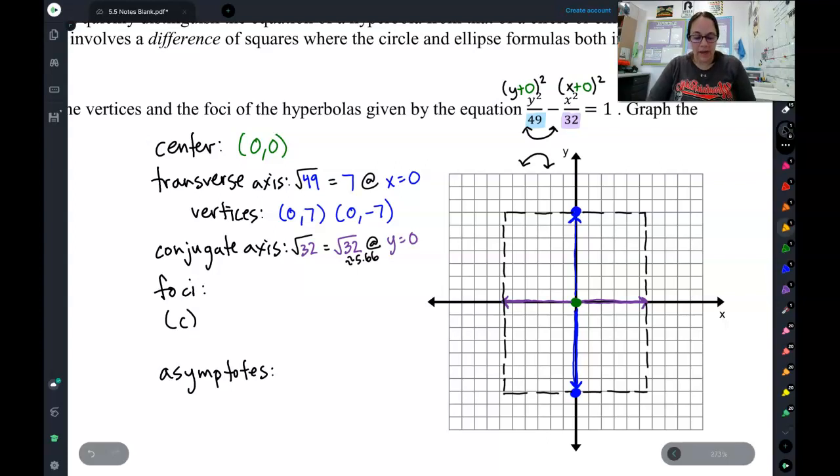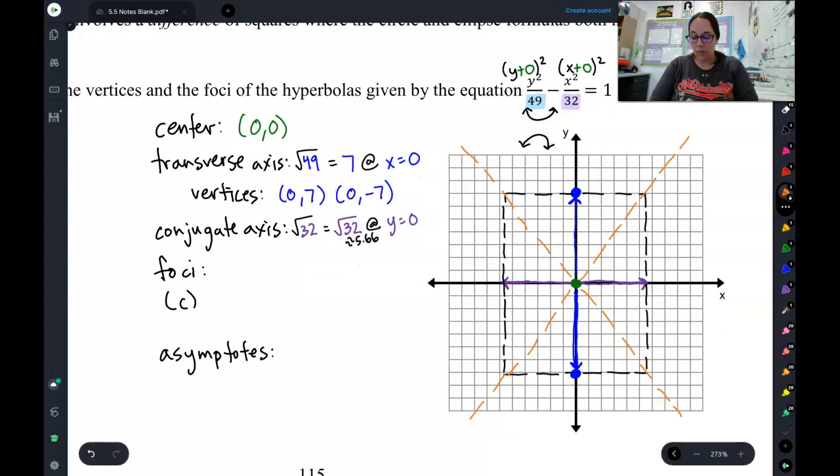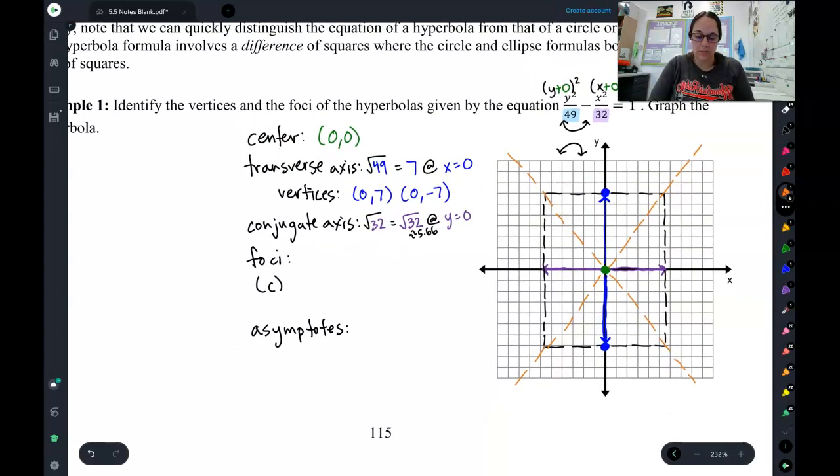And now that I have my guide rectangle there, now I can do my asymptotes. Asymptotes go through the center, diagonally through your guide rectangle. And there's our asymptotes. Now, we can come in here and write the equation for these two orange asymptotes.